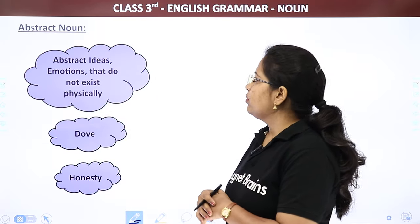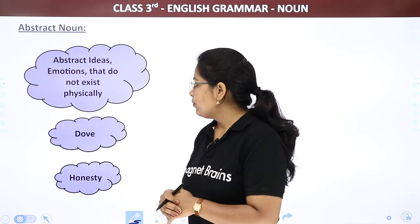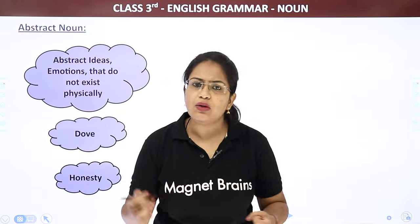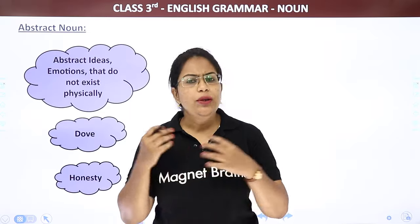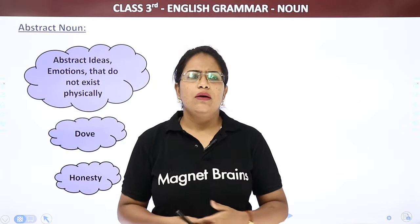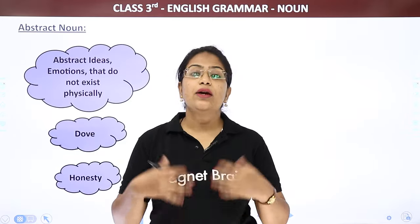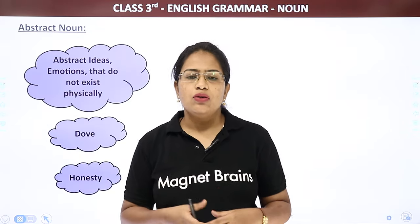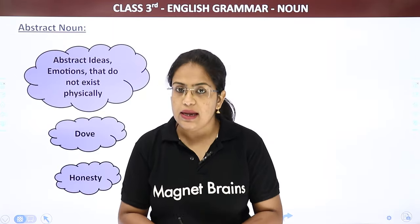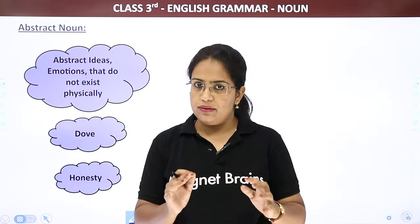The next one is abstract noun — abstract ideas or emotions that do not exist physically. It could be honesty, love, or anger — any feeling. Or even an idea, like if you get a school project and you give your teacher an idea: 'I will make a solar system.' That idea is an abstract noun — it is not physically present in front of you, but the idea exists.